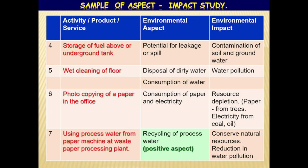We have seen earlier that aspects can be negative or positive. Here in this slide, we can see one aspect which is positive, shown with green background. The corresponding activity is using processed water from the paper machine as a waste paper processing plant, instead of fresh water. The positive aspect is recycling and reusing of processed water. The positive impact is conservation of natural resources and also reduction in water pollution, since processed water may contain process chemicals and when drained will lead to water pollution. We need to have a record of all the positive aspects and circulate them to all departments, so they can be replicated in other process departments to conserve valuable fresh water.